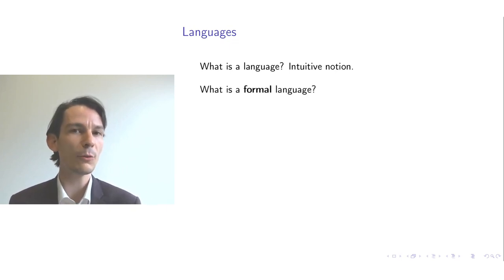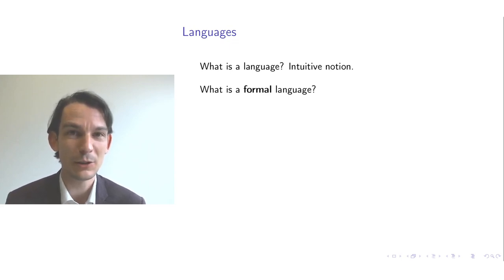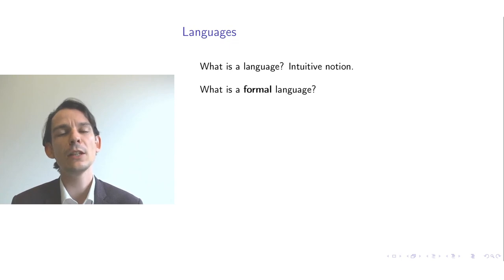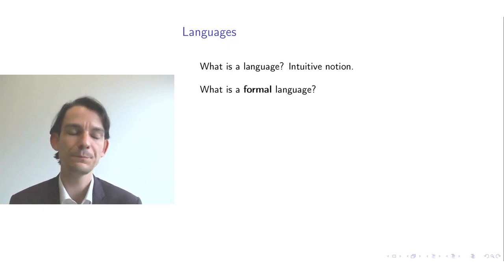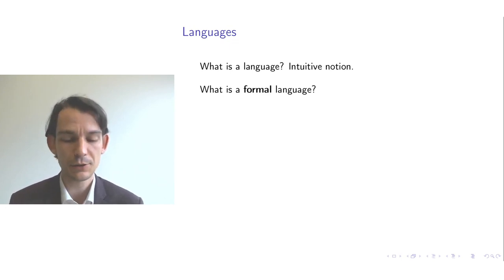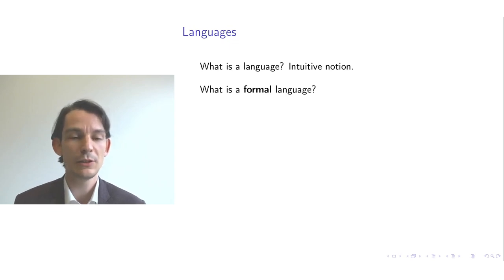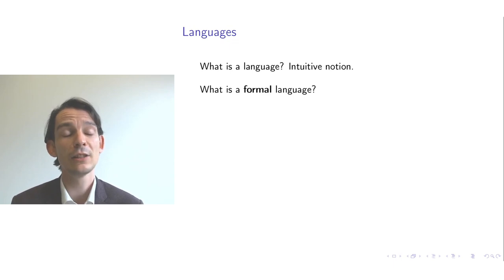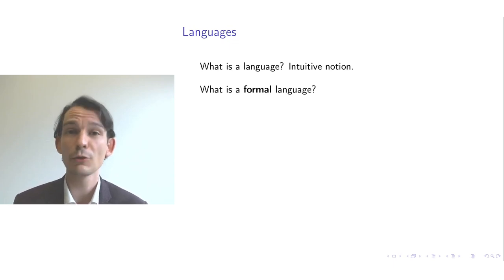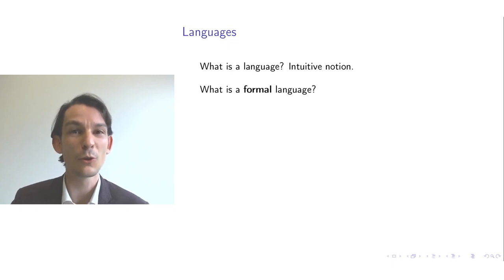A formal language is in contrast to a spoken language, because a formal language is a mathematical construction. You cannot say that of the English language, although there is a whole field of linguistics in which the structure of natural language is analyzed, and lots of progress has happened there as well. In this course, we focus on formal languages.